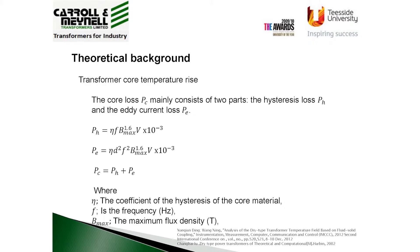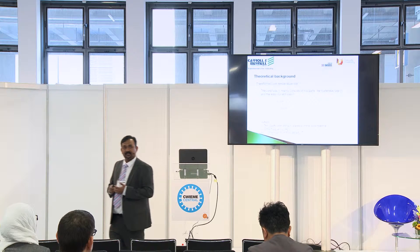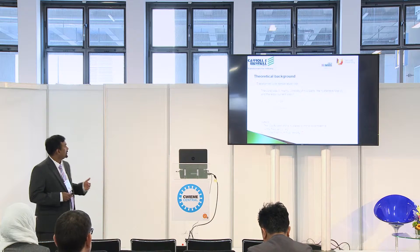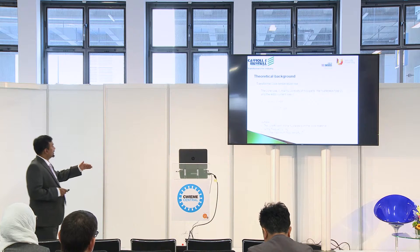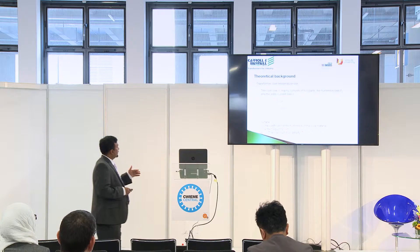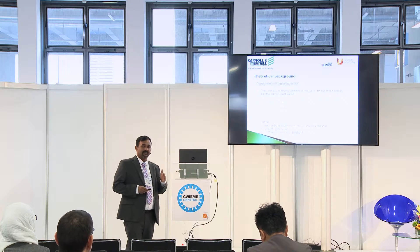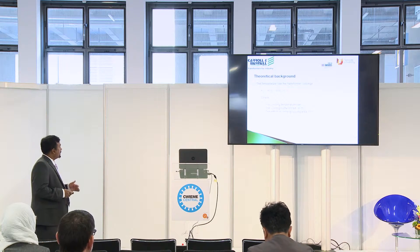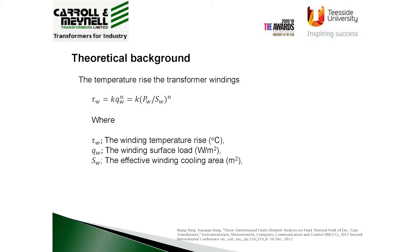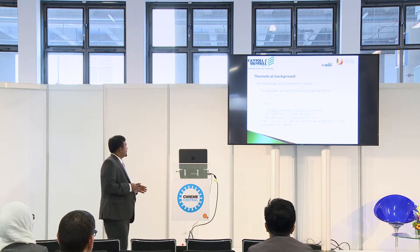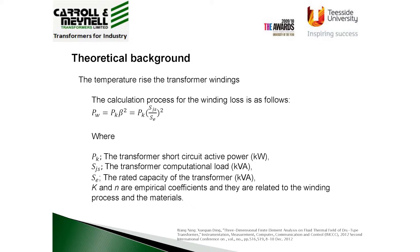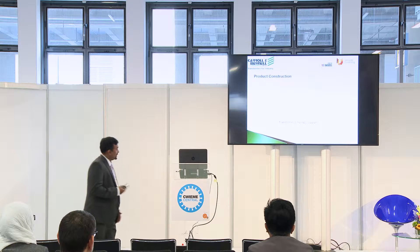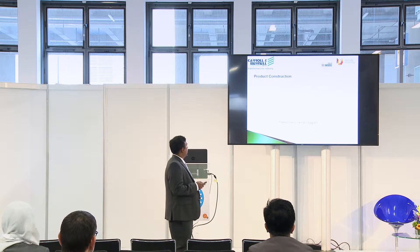We then estimate the core losses — as the previous speaker discussed, manufacturers specify core losses to some extent and there are different techniques to estimate them. You can perform basic calculations of hysteresis and eddy current analysis; the Steinmetz equation is well established and there are several advanced versions of it which we are currently using. Similarly, we can extend the formula to estimate the temperature rise in the windings.